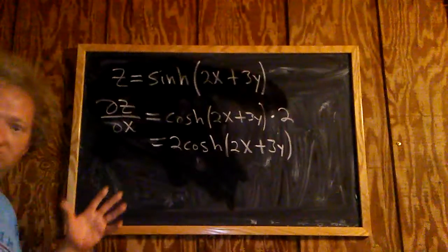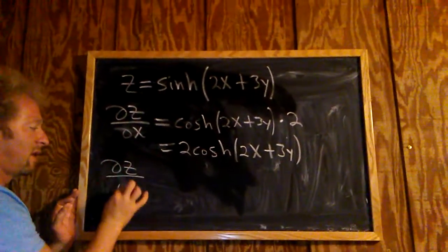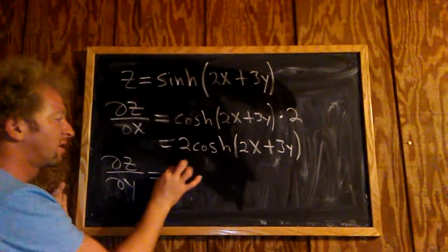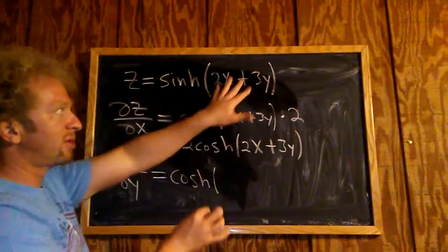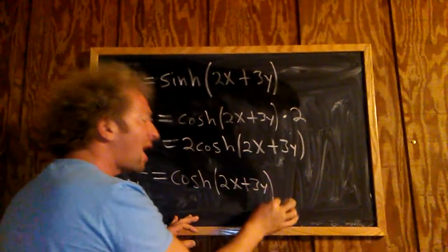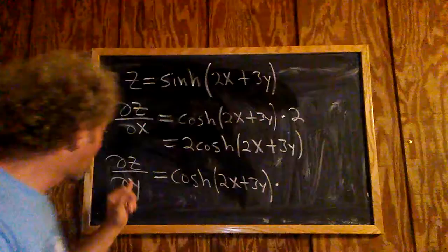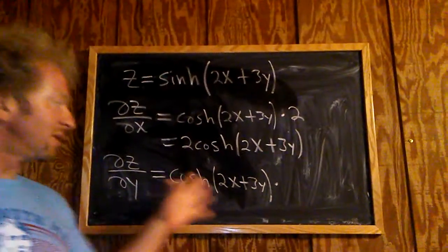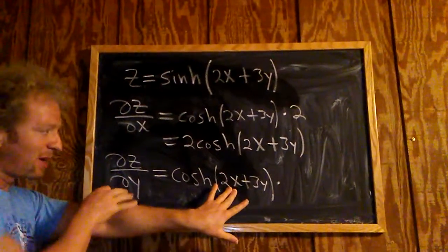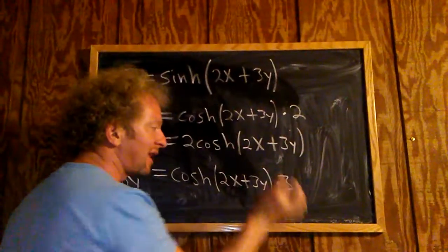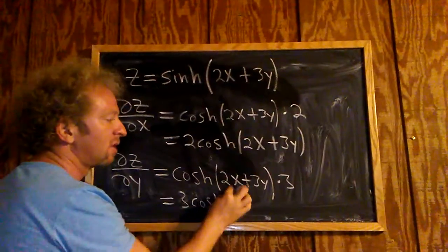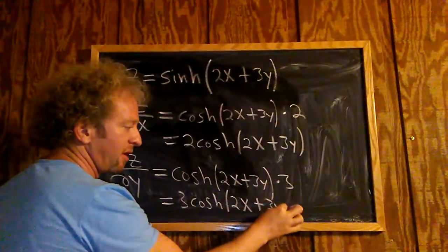Now we're going to find the partial with respect to y — del z del y. Again, chain rule. The derivative of sine is cosine, so cosine. We don't touch the inside, so simply 2x plus 3y, times the derivative of the inside. Now we're taking the derivative with respect to y, so the derivative of 2x is 0. And the derivative of 3y is simply 3. The last thing to do is put the 3 in the front, so this is equal to 3 cosine(2x + 3y).